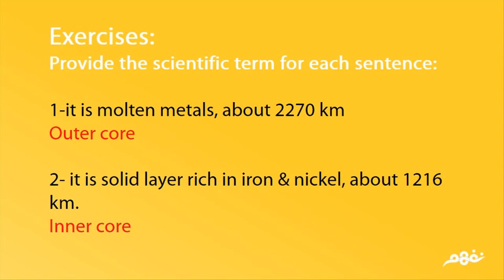Exercises: Provide the scientific term for each sentence. 1. It is molten metals, about 2,270 km. — Very good. Outer core. 2. It is a solid layer rich in iron and nickel, about 12–16 km. — Very good. Inner core.